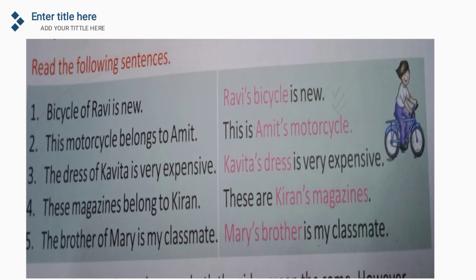Now let's read the possessive form versions: 'Ravi's bicycle is new,' 'This is Amit's motorcycle,' 'Kavita's dress is very expensive,' 'These are Kirin's magazines,' 'Mary's brother is my classmate.' You can see the sentences on both sides mean the same. However, the sentences on the right-hand side are shorter and read better — like 'bicycle of Ravi is new' becomes 'Ravi's bicycle is new.'